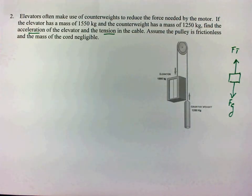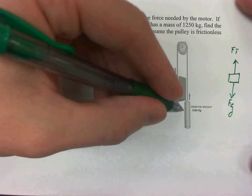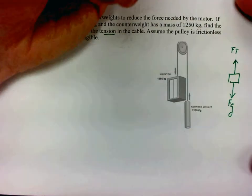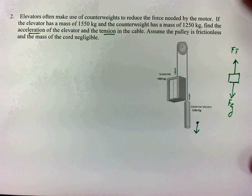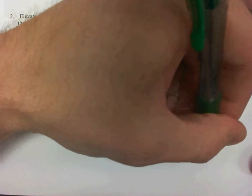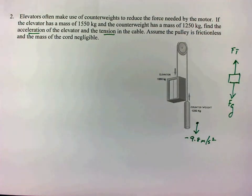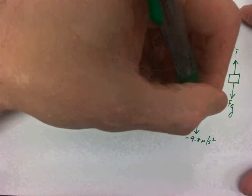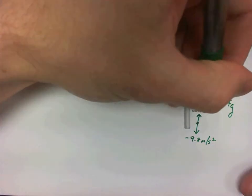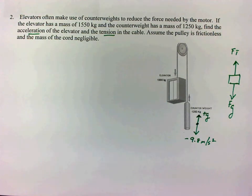If we consider just the counterweight and think about what's going on with the object, since it's being suspended, we know that the downward acceleration is that of gravity — negative 9.8 meters per second squared. So if this thing is to move up, the acceleration in the upward direction has to be greater than gravity — greater than 9.8 meters per second squared.